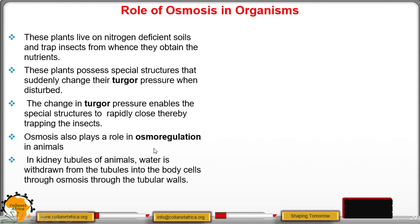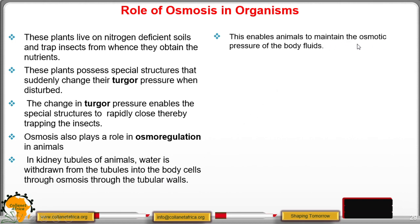Another role of osmosis is osmoregulation in animals: in the kidney tubules, water is withdrawn from the tubes through osmosis across the tubular walls, enabling animals to maintain the osmotic pressure of body fluids. To summarize, the roles of osmosis in plants include: absorption of water and minerals from the soil, support in herbaceous plants and young seedlings, opening and closing of stomata, and feeding in insectivorous plants. For animals, osmosis is important in osmoregulation.